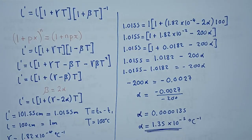So this is our value for the coefficient of linear expansion: 1.35 times 10 to the power negative 5 per degree Celsius. Thank you very much. If you have a question, feel free to drop it in the comments. Have a good day.